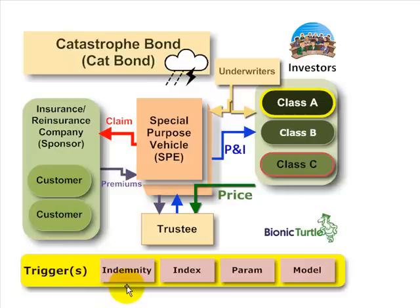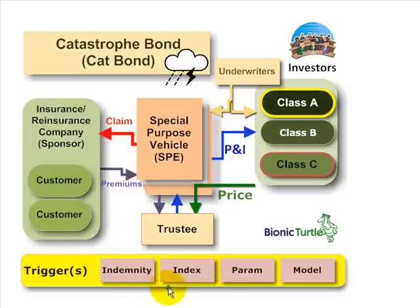The classic trigger was an indemnity trigger — if there's an indemnity trigger, this is an indemnity or indemnified note. That means the trigger is based on internal, possibly actual losses at the sponsor, so that's an internal trigger. The other trigger types tend to be external. The index trigger is based on some index that is external to the company and would be objective to both the sponsor and the investors.